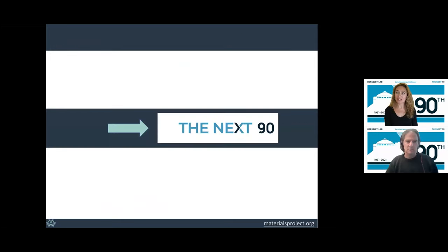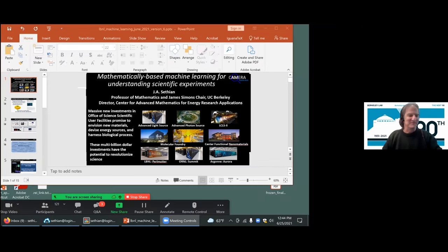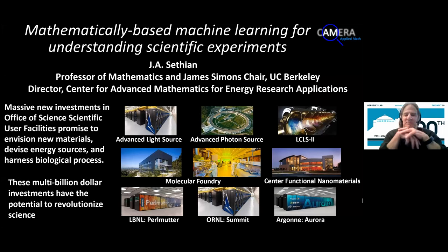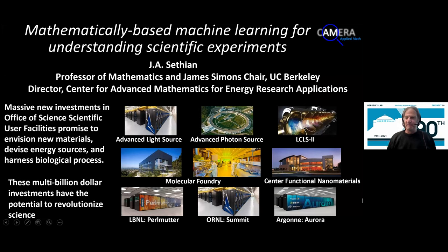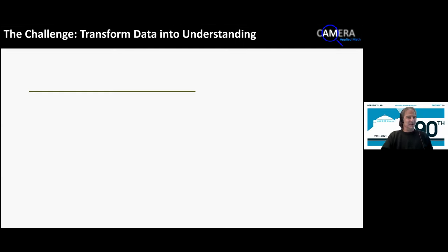With that, thank you for your time. I'm very excited to introduce our next speaker, Jamie Sethian. I'd like to talk about mathematically based machine learning for understanding scientific experiments. We are a Department of Energy laboratory and there are large facilities throughout the complex — Advanced Light Source, Advanced Photon Source, LCLS, the Molecular Foundry, supercomputers at NERSC. These are massive instruments. The trick is to transform the data that comes from these experiments into understanding.